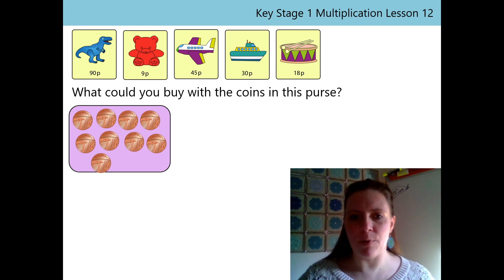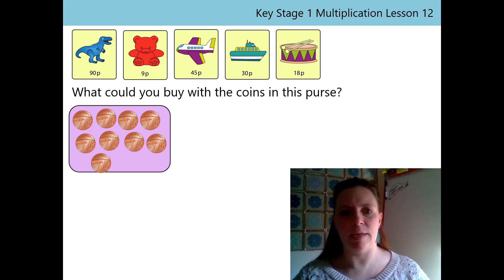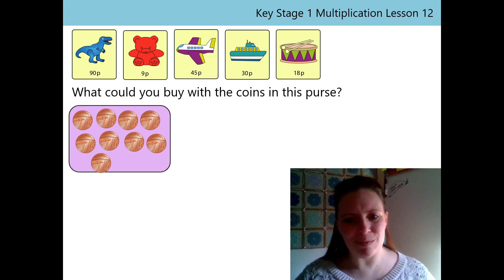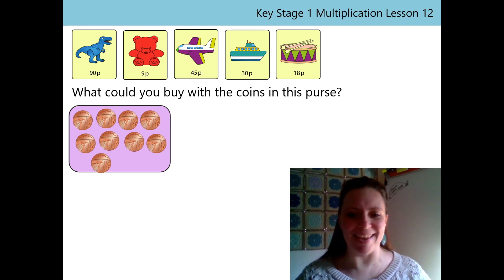Let's pretend we're going shopping today. I wonder what we could buy with the coins in this purse. Here's the lovely things we could buy. We've got a lovely dinosaur, a teddy, a lovely aeroplane, a nice boat, and a drum. But I'm not sure what I could buy yet. I think I'm going to need to count the coins. Can you see which type of coin they are? Yeah, they're 1p, 1p, 1p coins. Let's count them.